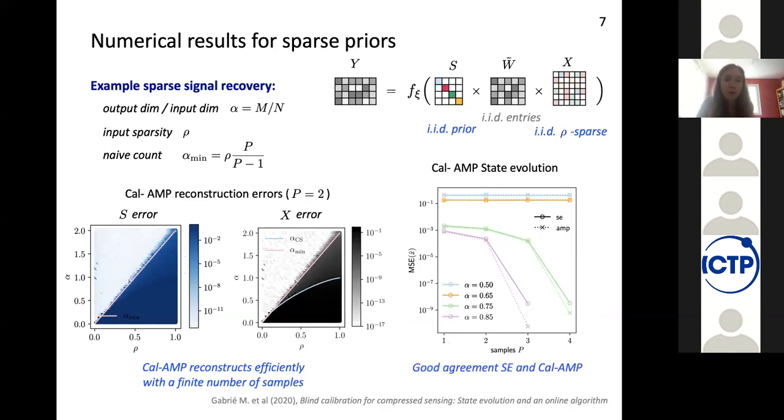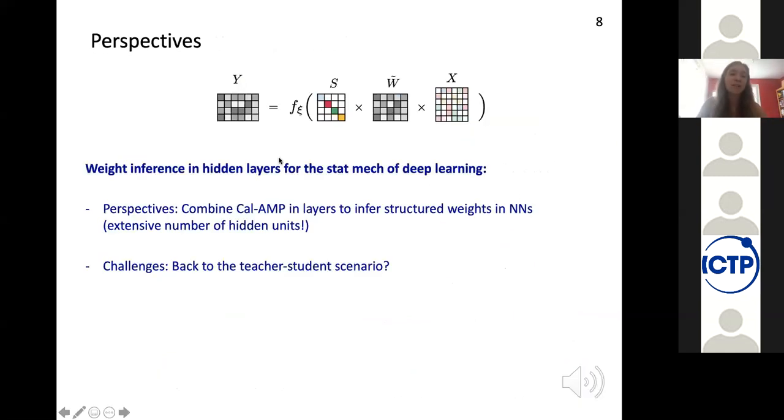So just to wrap up, the perspective of this work is to go back to this problem of weight inference in deep neural networks and combine the calibration AMP problems in order to infer weights in a neural network that is deep with an extensive number of units. And the challenge that remains is that back to the teacher-student scenario, we will need to assume that we already know the random fixed parts of the weight matrices. So this is something we're still thinking about and that we are happy to discuss with whoever is interested.